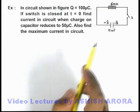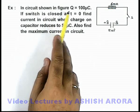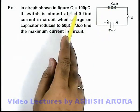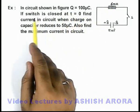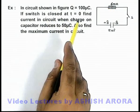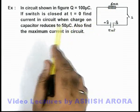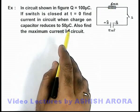In this example, we are given that in the circuit shown in figure, the charge on capacitor is 100 microcoulombs. If the switch is closed at t = 0, we are required to find the current in circuit when charge on capacitor reduces to 50 microcoulombs.